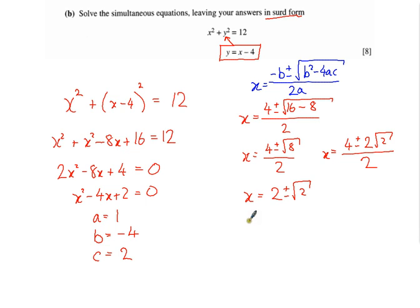So if x equals 2 plus root 2, then y is equal to—well, it's x take away 4. If I take away 4 from this, that's minus 2 plus root 2.